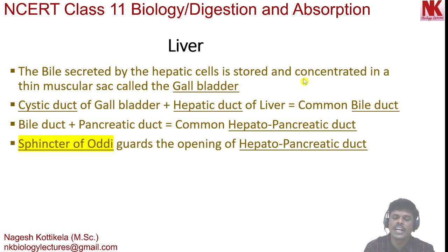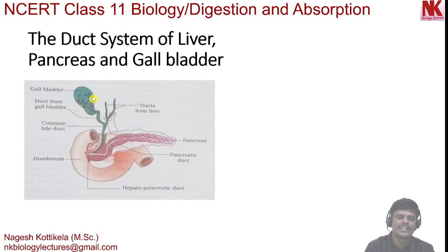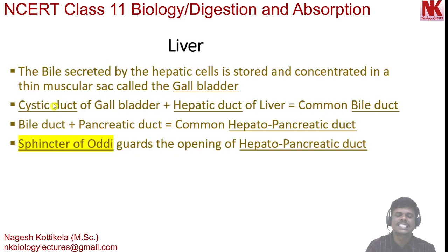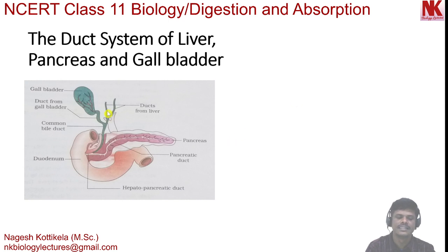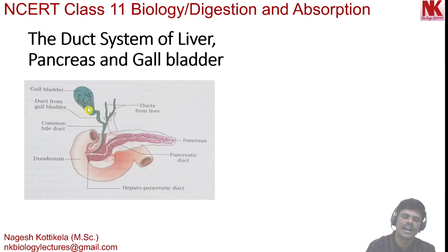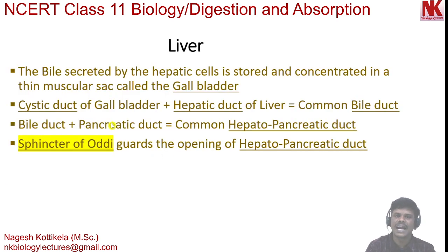Bile juice is stored and concentrated in a thin muscular sac called the gallbladder, as you can see in the diagram. The cystic duct of the gallbladder joins with the hepatic duct of the liver to form the common bile duct. You can see in the diagram the cystic duct of the gallbladder and the two ducts coming from the two lobes of the liver joining to form the hepatic duct.